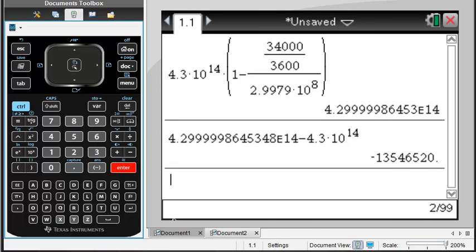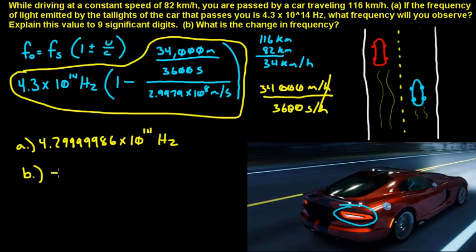And the reason why it's negative is because we went down. As it's going away, the frequency we observed is going to be lower than the actual frequency. And that's how you solve that problem.